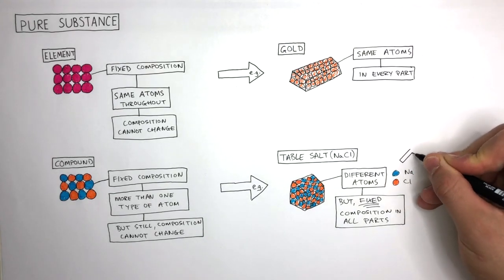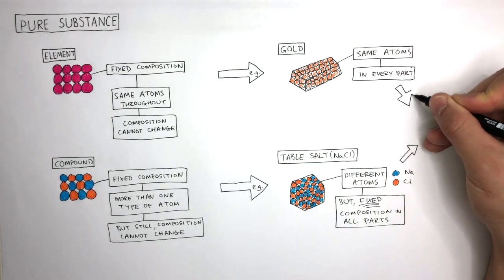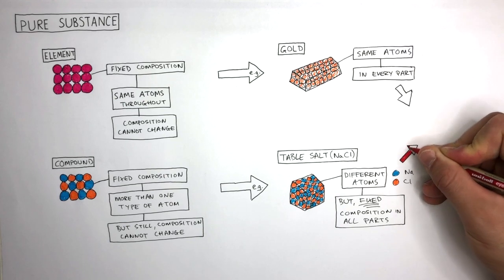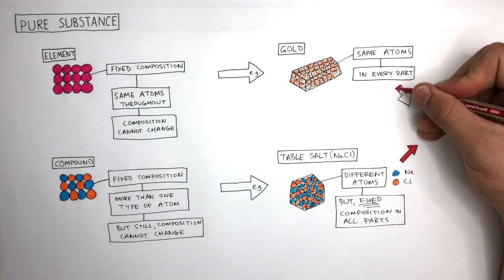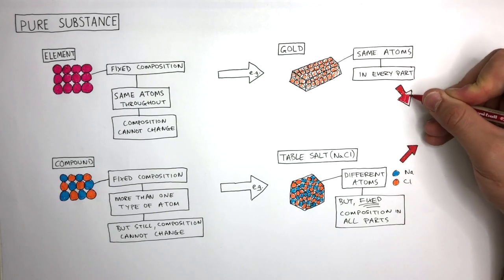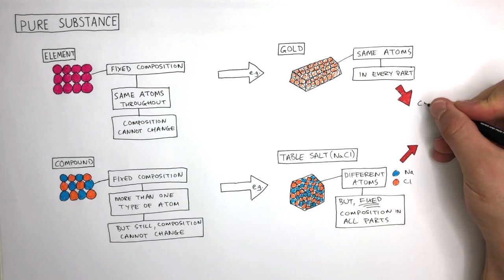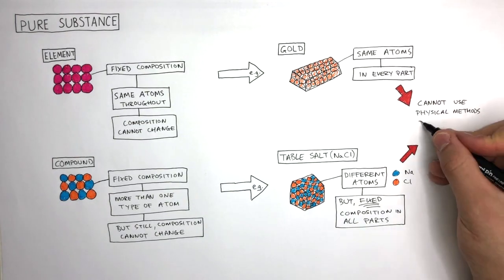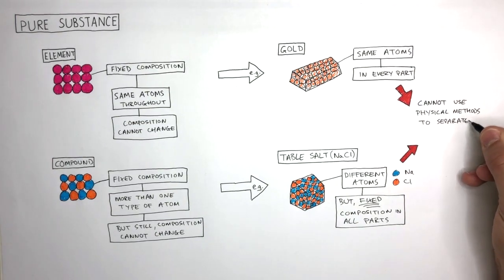In elements and compounds, there is a fixed composition. The atoms are held firmly in place by chemical bonds. Because of this, we cannot use physical methods to separate these atoms as they are already pure.